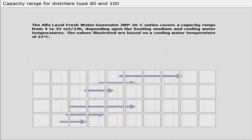The Alpha Laval Freshwater Generator JWP 26C series covers a capacity range from 4 to 35 cubic meters per 24 hours, depending upon the heating medium and cooling water temperatures. The values illustrated are based on the cooling water temperature of 32 degrees Celsius.